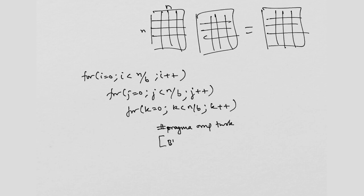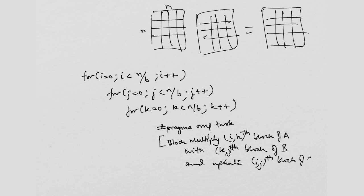I am going to block multiply i kth block of A with k jth block of B and update i jth block of C, right? I can put this in brackets and write a structured block or I can call a function, whatever. But that is what is important.